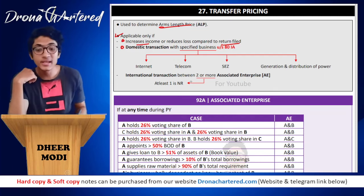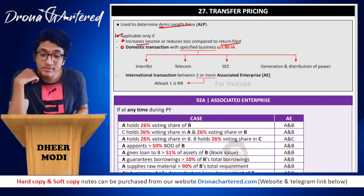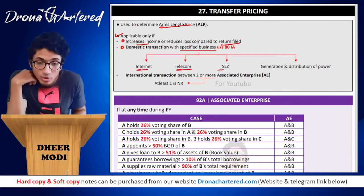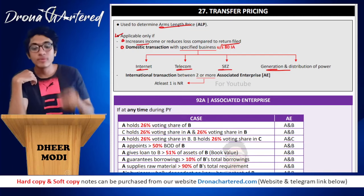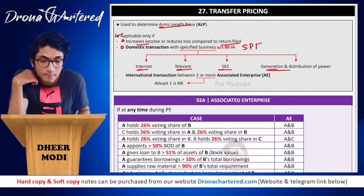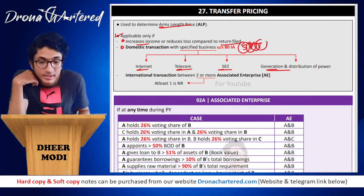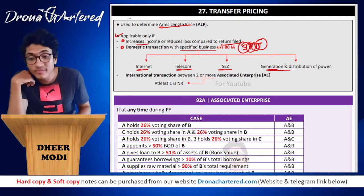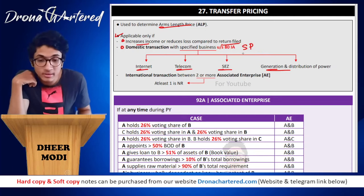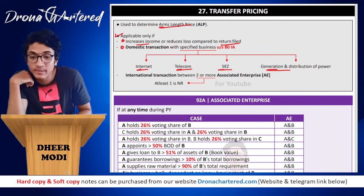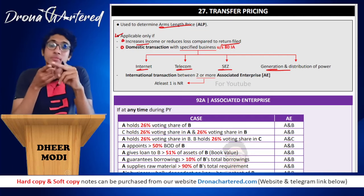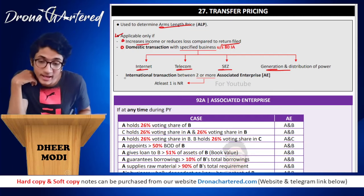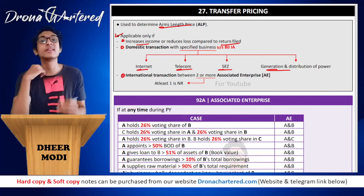In case of domestic transactions, transfer pricing will never reduce your income. For domestic transactions with specified businesses under Section 80IA, the specified businesses are internet, telecom, SEZ, and generation and distribution of power — remember this as 'PIST'. If there is any domestic transaction with these four specified businesses, transfer pricing provisions will become applicable. The chapter is mainly concerned with international transactions between two or more associated enterprises.